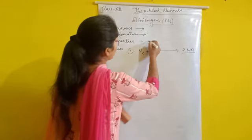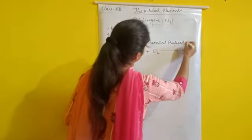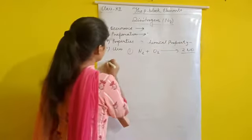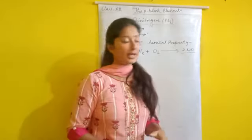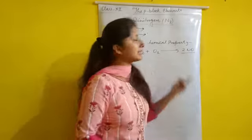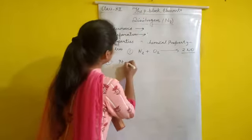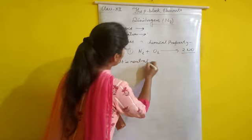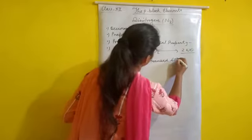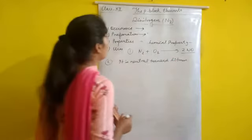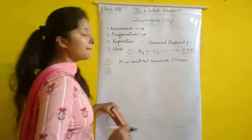Another chemical property: dinitrogen is neutral towards litmus. It is neither acidic nor basic, so it has no effect on litmus paper.